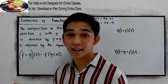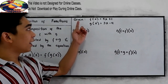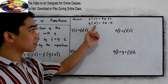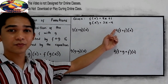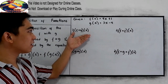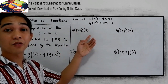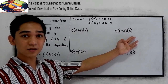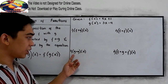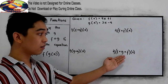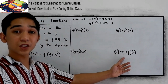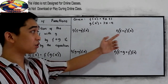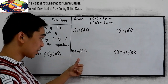To better understand, let's have this problem. We have the given: f of x is equal to 4x plus 1, and g of x is equal to 3x minus 4. For number one we're going to find f composed of g of x. Number two, f composed of f of x. Number three, g composed of g of x. And number four, f composed of g composed of f of x. I will try to answer numbers 1 and 2, and in your turn you're going to answer 3 and 4.